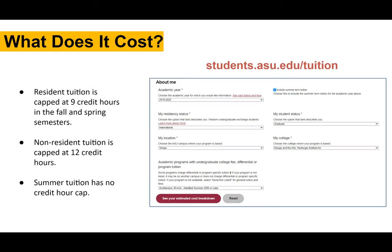There will be a full breakdown of all the tuition and fees, which we'll show on the next slide. That is where you'll get a full cost breakdown. With non-resident tuition, it is capped at 12 credit hours. So for international students and students that are not a resident of Arizona, that is how tuition works. And then summer tuition has no credit cap, so tuition will be by the credit hour in that instance.